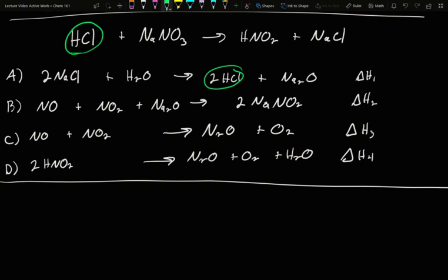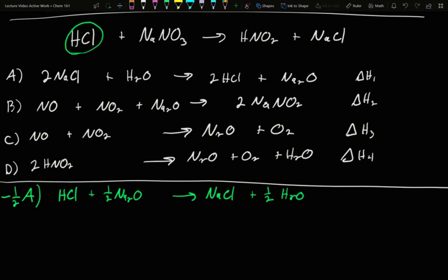But A also comes with two of it. I only want one. So what I need to do is I need to rewrite A as a flipped, which I'll do a negative, and it needs to be half as big. I need to rewrite A as half of the right side, now on the left. So one HCl plus a half Na2O, we'll have our arrow, and then we'll have what used to be the left side, now on the right: 2 divided by 2, so 1 NaCl plus a half water.